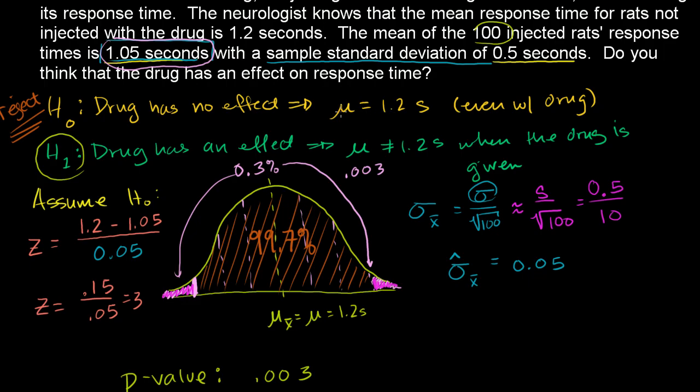It has no effect. In this situation, where we're really just testing to see if it had an effect, whether an extreme positive effect or an extreme negative effect would have both been considered an effect, we did something called a two-tailed test.